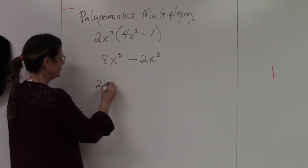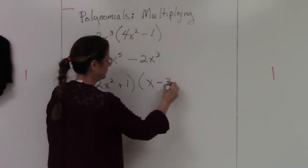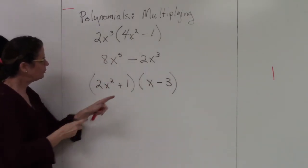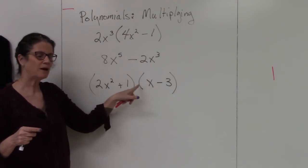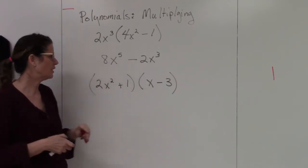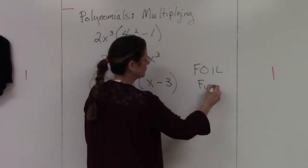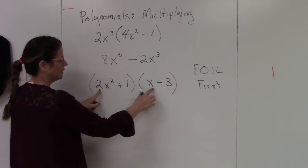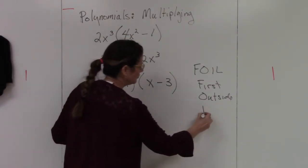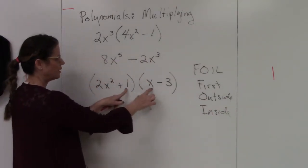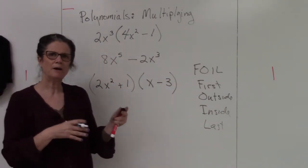If I do a binomial times a binomial — notice there's nothing in between the set of parentheses, no plus or minus, which shows multiplication. Some of you may remember this as FOIL. You multiply the first: 2x squared times x. Then the outside: 2x squared times negative 3. Then the inside: 1 times x. And then the last: 1 times negative 3.